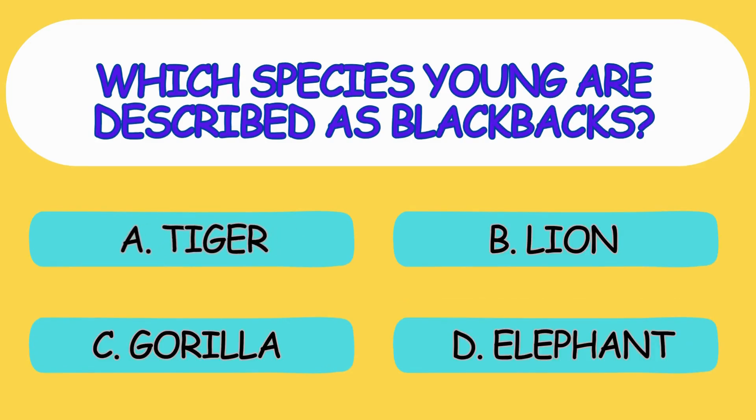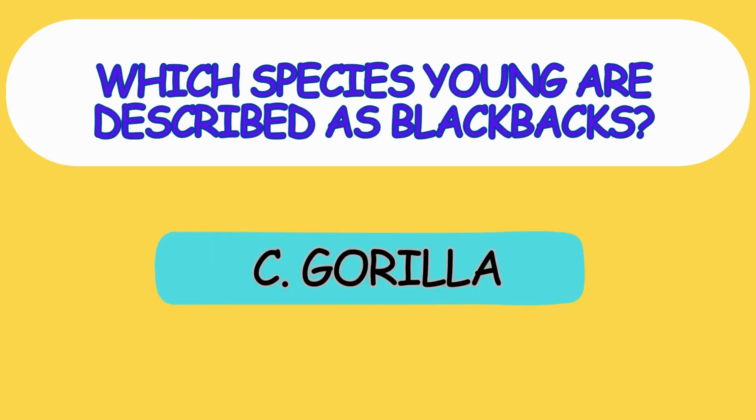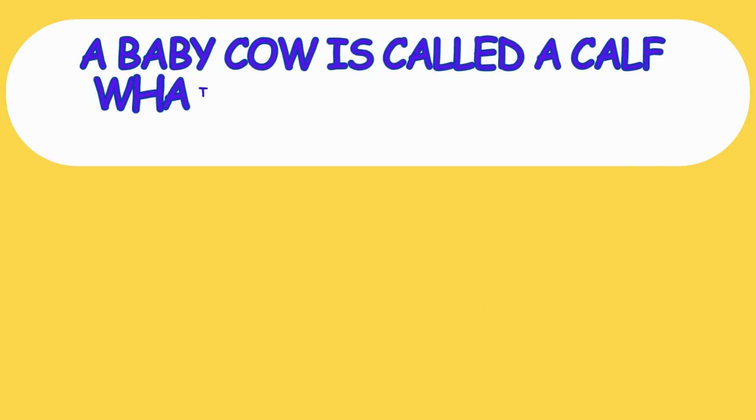Which species young are described as blackbacks? A. Tiger, B. Lion, C. Gorilla, D. Elephant. The answer is option C, Gorilla.